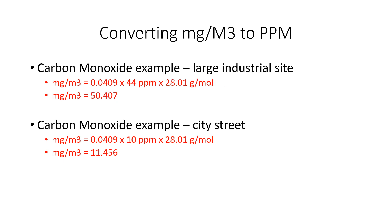Let's switch gears and look at carbon monoxide. From a large industrial site, we're still trying to find milligrams per meter cubed. On this sample, it comes back at 44 ppm. We plug and chug through the formula, and the milligrams per meter cubed comes out to 50.407.